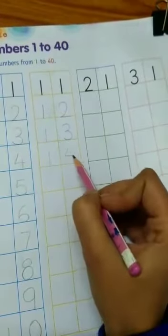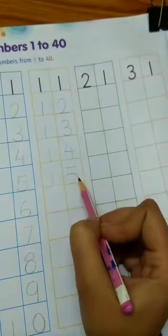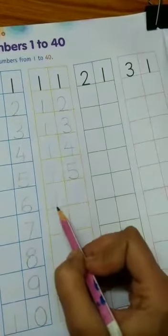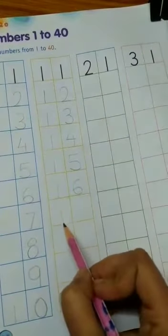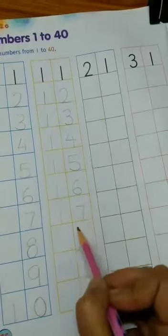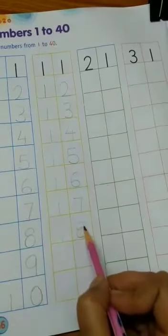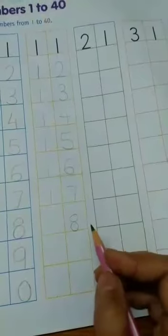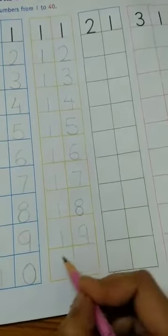Then 1, 4, 14. 1, 5, 15. 1, 6, 16. 1, 7, 17. 1, 8, 18. 1, 9, 19. 1, 9, 19.